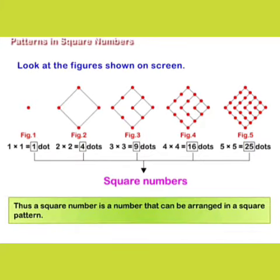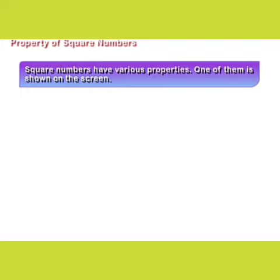Thus, a square number is a number that can be arranged in a square pattern. Property of square numbers.